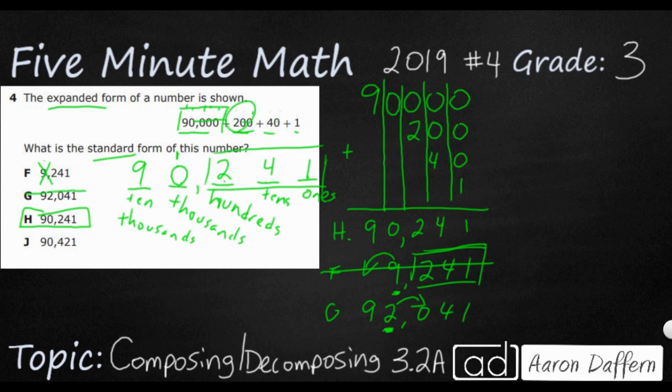And then finally, J. J just kind of switched the 4 and the 2. If you look at those two right there. They switched the 4 and the 2. It should be a 2 and a 4. And that's how we solve this problem.